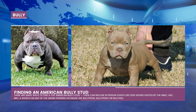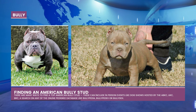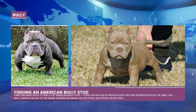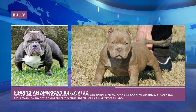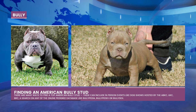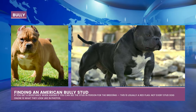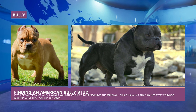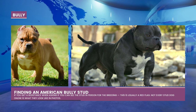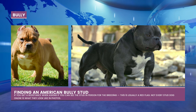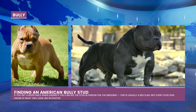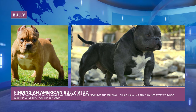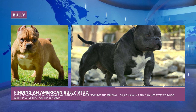Finding a top American Bully stud can be done by searching online pedigree databases like Bullopedia, Bully Pedigrees, or Bully Dicks, or by attending in-person events like dog shows hosted by the ABKC, UKC, or BRC — especially helpful when considering line breeding and looking for a common ancestor. You can also learn about a stud owner through word of mouth or by visiting them in person. Breeders who photoshop their dogs will do almost anything to keep customers from seeing their dogs in person — this is usually a warning sign.